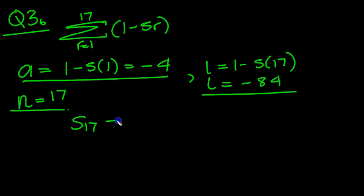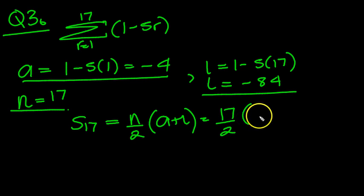So now we can work out the sum of the first 17 terms. It would be n over 2, a plus l, which is equal to 17 over 2, a, which is minus 4 plus minus 84.